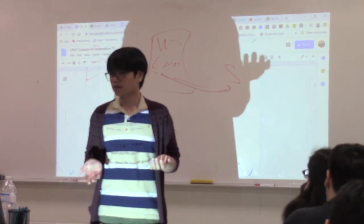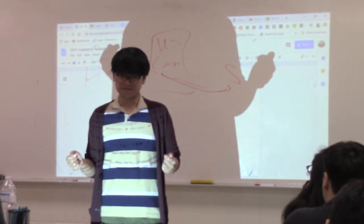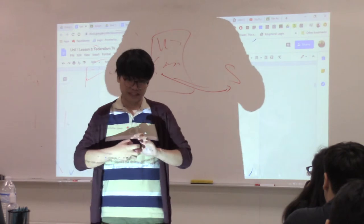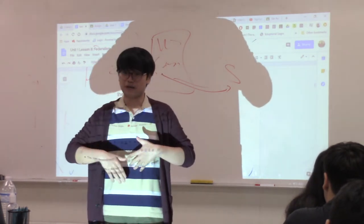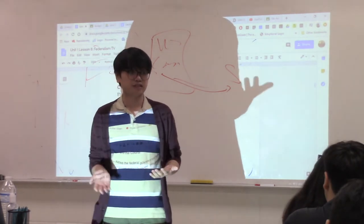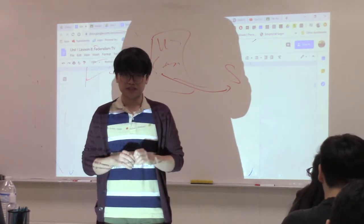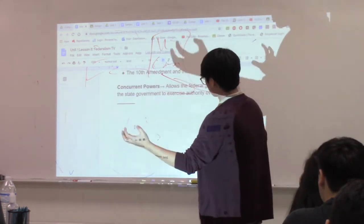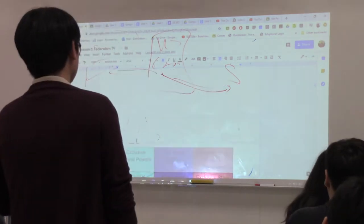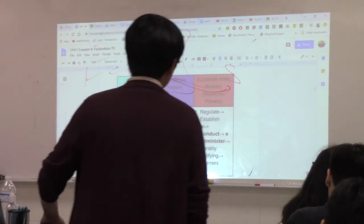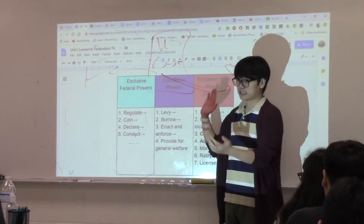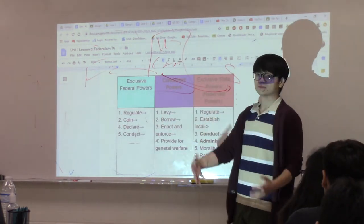Taxation is a concurrent power. Some of you who are working get taxed by the federal government on your income, but when you buy something, there's a sales tax that goes to the state government. Both levels of government can levy taxes — that's a concurrent power. You need to know which powers are specific to the federal government, which are specific to the states, and which they can both exercise.